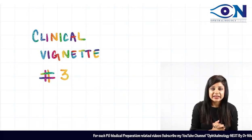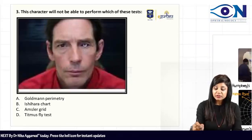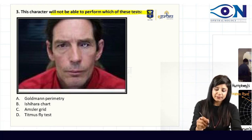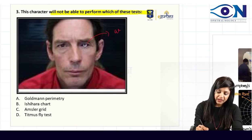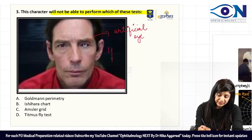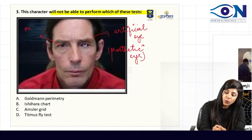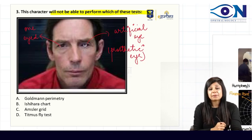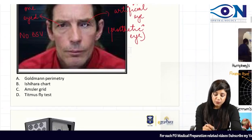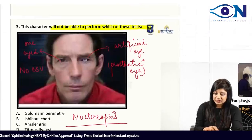Welcome to clinical vignette 3. The question is: which of the following tests will this character not be able to perform? This character has an artificial eye — a prosthetic eye. Therefore, this person is a one-eyed person. Because the person has only one eye, there will be no binocular single vision and therefore no stereopsis — very important.